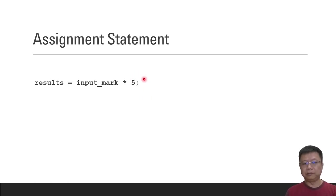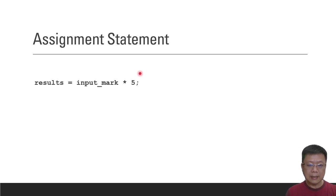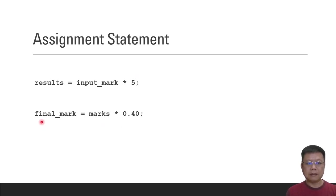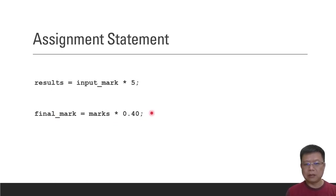Here is the question: what is this 5 about? In a very short program you may recognize it, but in a longer program with maybe thousands of lines of code you may not remember what 5 refers to. Similarly, final_mark = marks * 0.40 — what is this 0.40? We assign it to final_mark, but what does 0.40 represent?